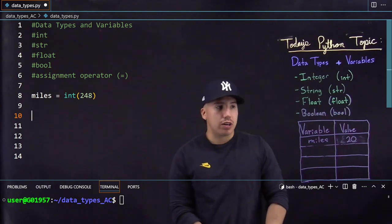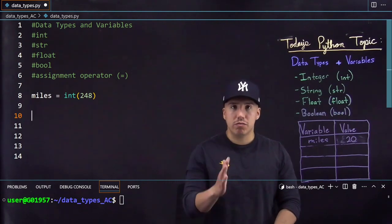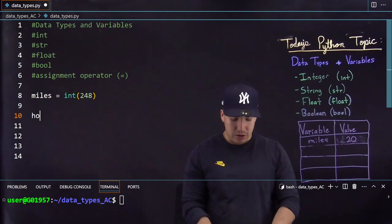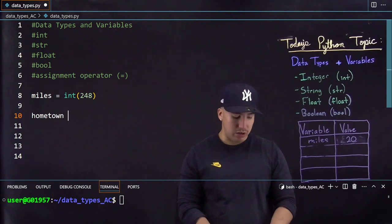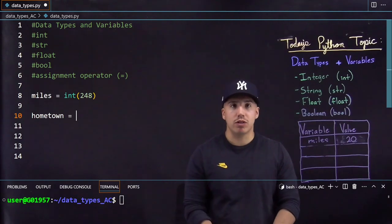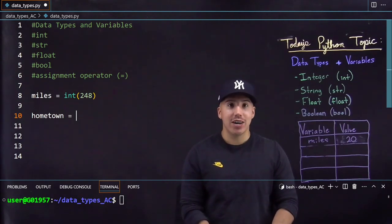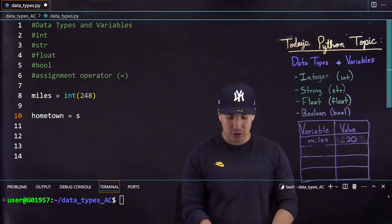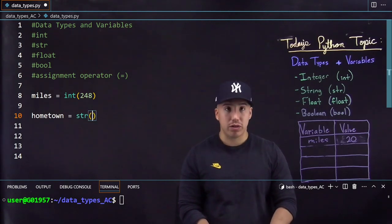Okay let's declare a new variable. This time we'll declare a string. So the same concept same procedure. So call it hometown because we're gonna use my hometown as an example. This is where I'm driving to tomorrow. This is what's 248 miles away.